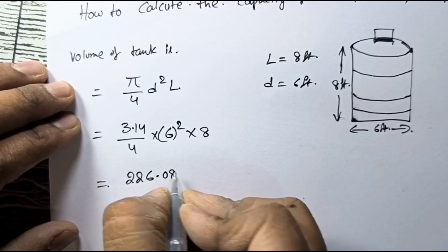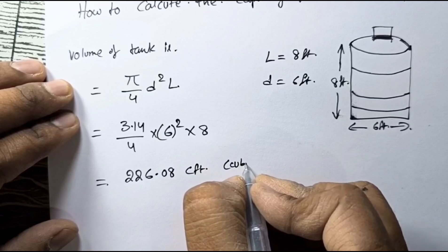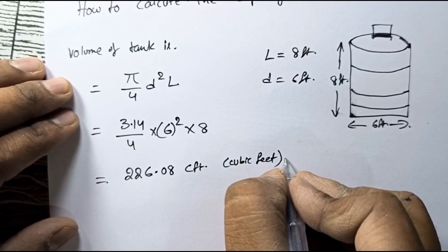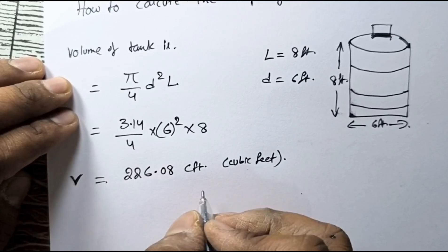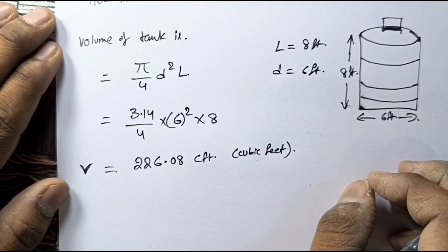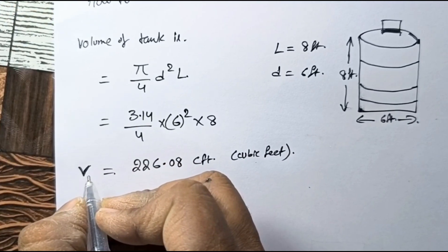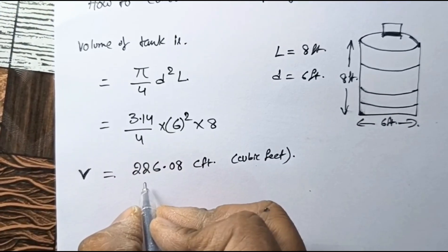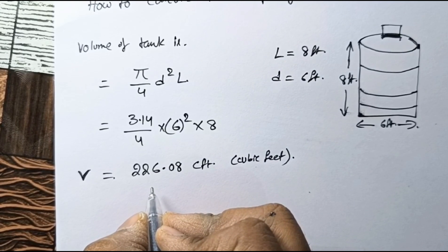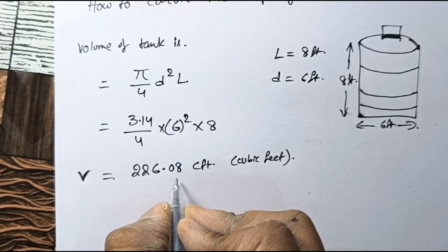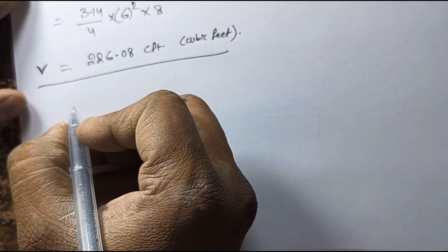When we calculate this value, we get approximately 226.08 cubic feet. So we have now calculated the volume of the tank, which is 226.08 cubic feet.